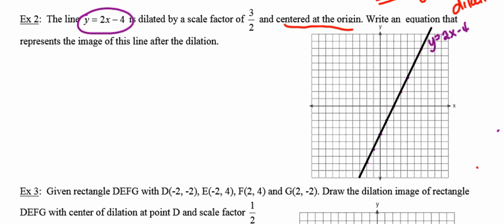In order to dilate a line, what I'm going to do is pick a couple of points on the line. They can be any points that you want. I'm going to pick the y-intercept because it's going to be easy to work with. So (0, -4). And I'm also going to pick the x-intercept because that will be fairly simple to work with. (2, 0).